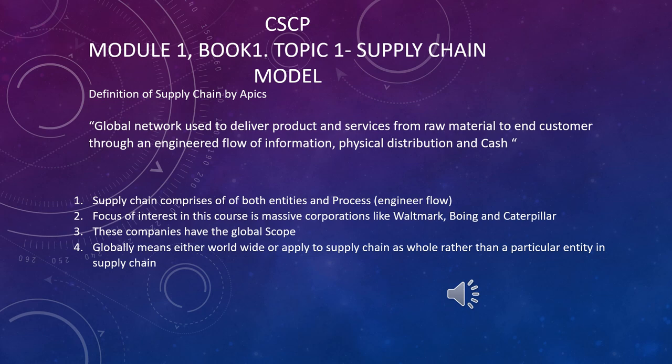First, we will discuss the definition of Supply Chain by APICS: a global network used to deliver products and services from raw materials to end customers through an engineered flow of information, physical distribution, and cash.